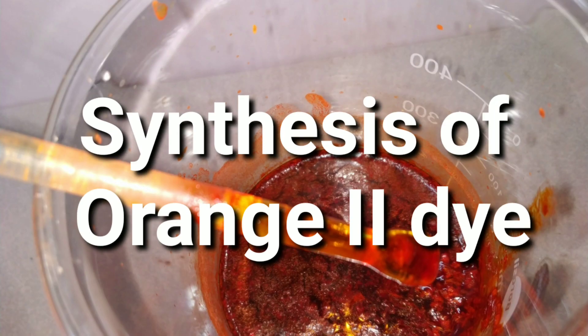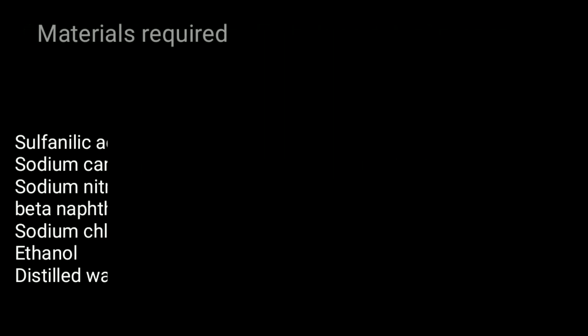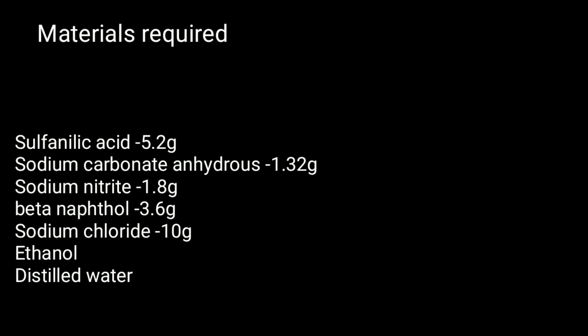Hello friends, today we will be synthesizing the Orange 2 SO dye, also called acid orange 7 or beta-naphthol orange. This is used as a dye in textile industries. This is not methyl orange indicator dye.